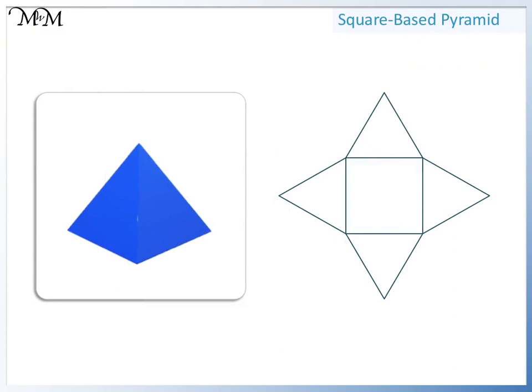Here we have a square based pyramid. Its surface is made up of triangles.